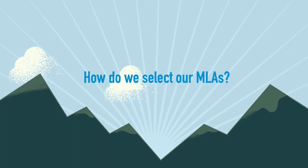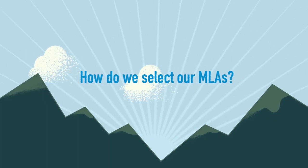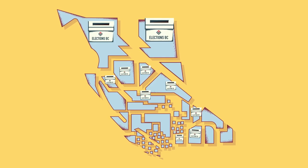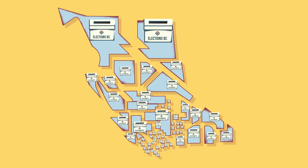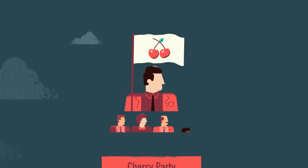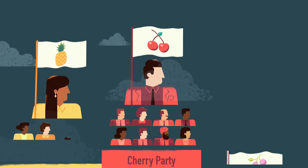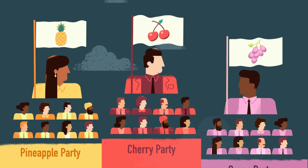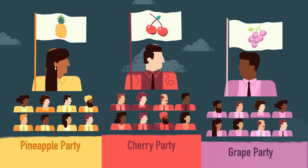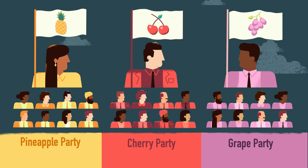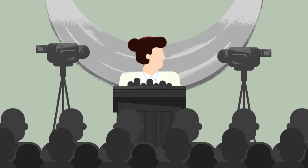How do we select our MLAs? Let's review the election process. The province is divided into electoral districts, and each district has its own election race. Political parties endorse individuals, called candidates, to represent their party in one of the electoral districts and compete for the job of MLA. These candidates generally share the same views and goals as their party. Some candidates also run independently, separate from any political party.